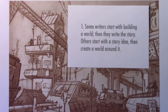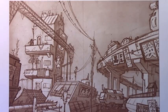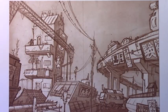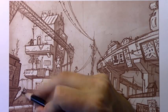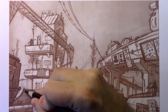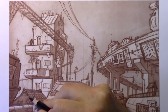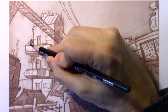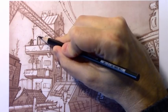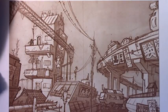Tip number one: some writers start with building a world then write the story; others start with a story idea and create a world around it. There's no single best way. I definitely fit into the latter category — starting with the story idea and then creating the world to support it. But I know many people devote themselves to inventing the world entirely before settling on a story, especially if they're fascinated with world creation or believe many stories could be told in that world.